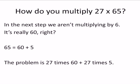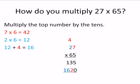What about the 60? The next step — we aren't multiplying by 6, it's really 60. Remember when we did expanded form? 65 equals 60 plus 5. So this problem is really 27 times 60 plus 27 times 5. The next step is to multiply the top number by the 10's. The 10's digit is the 6, but it's not 6 — it's really 60.